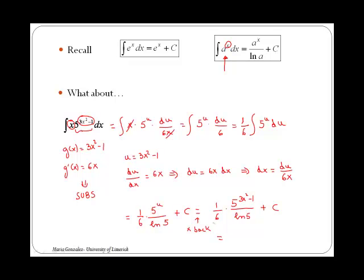And if you want, you can multiply the two fractions so you can write your answer as a single fraction. So we have 5 to the 3x squared minus 1 over 6 by ln of 5, everything plus the constant of integration.